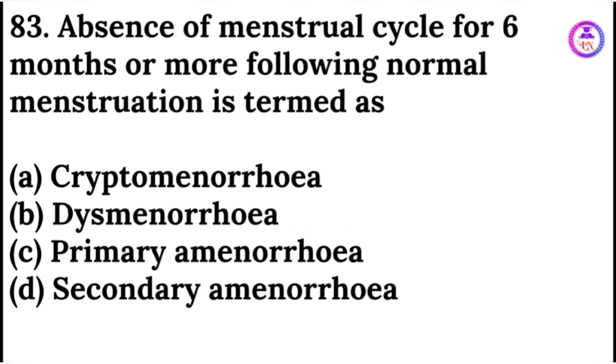Absence of the menstrual cycle for 6 months or more following a normal menstruation is termed as secondary amenorrhea.